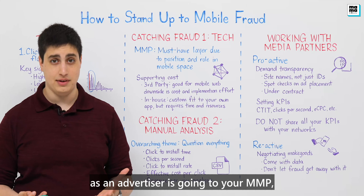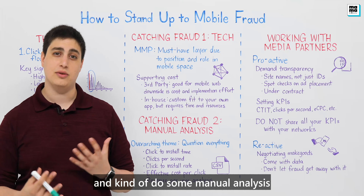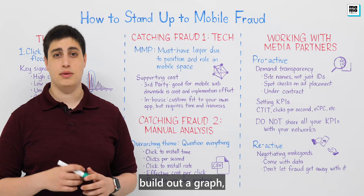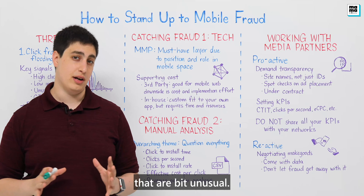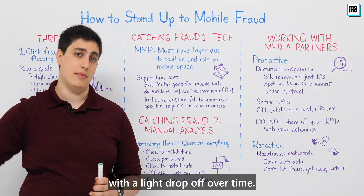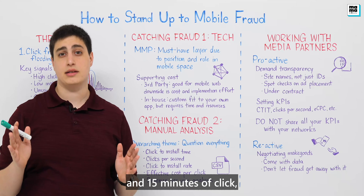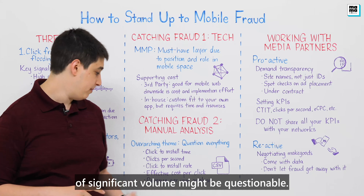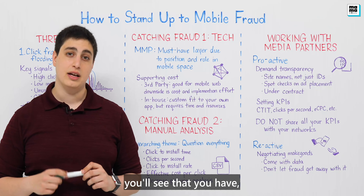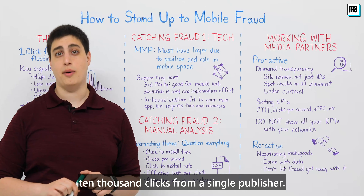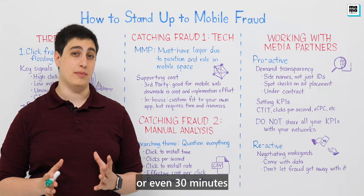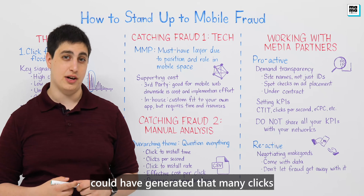As an advertiser, you can go into your MMP, download data, and do manual analysis. Look at your click-to-install time — build a graph of clicks over time. Typical click-to-install time looks like a steep rise then a sharp decline. Most installs occur within one to fifteen minutes of a click; anything outside that at significant volume is questionable. Also look at effective clicks per second — with click flooding you might see 10,000 clicks from a single publisher, but when you drill down they were all generated within one hour or 30 minutes.